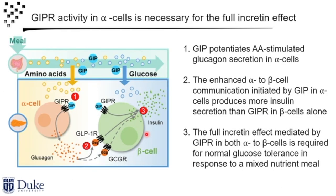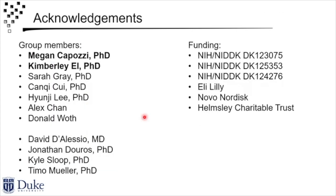This is the overall effect. We would argue that the full incretin effect in response to a meal — which includes amino acids — has both direct and indirect effects of GIP, which I think is becoming obvious as the major physiological incretin hormone. It can work directly on the beta cell, but it can also work through the alpha cell, initiating alpha-to-beta cell communication through these two receptors to generate more insulin secretion and control glucose. I want to thank Megan and Kim and our collaborators and funding, and I'm happy to take any questions.